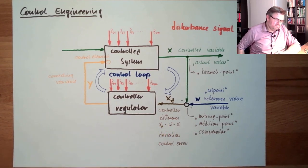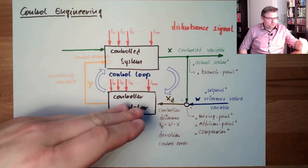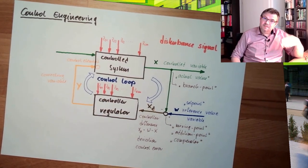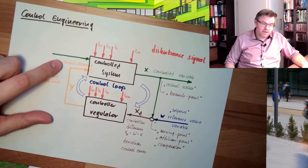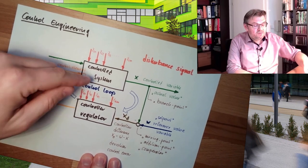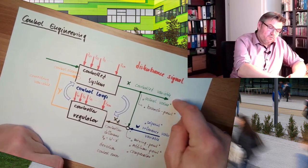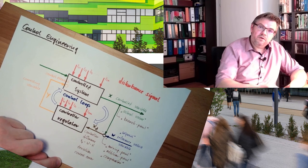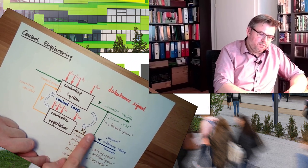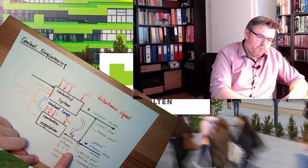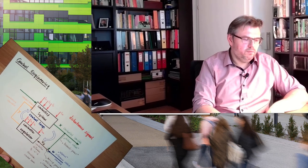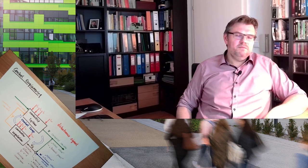So these are the names: we know what controlling is, we know what the controller is — the part which does the controlling. The controlled system is the part where we influence the controlled variable. The control element is the item inside which directly influences the controlled variable. The actual value is the current representation of the controlled variable; the setpoint is the current value of the reference variable. Branch points, mixing points, addition points, and comparators are now named. There is a slight difference between controller deviation and control error, and there are disturbances.